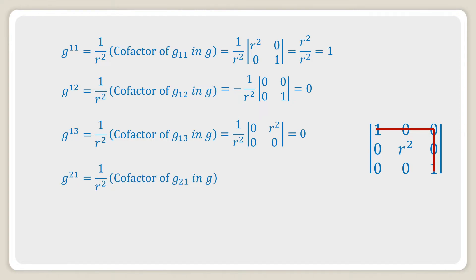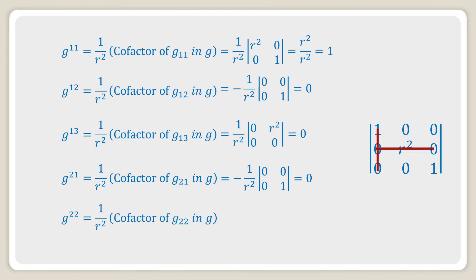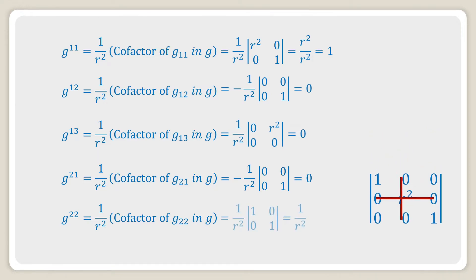Next, g^21 is equal to one over r² into the cofactor of g_21 in g, which is equal to minus one over r². The relevant determinant simplifies to zero. Then g^22 is equal to one over r² into the cofactor of g_22, which equals one over r² into the determinant of 1, 0; 0, 1, giving one over r².